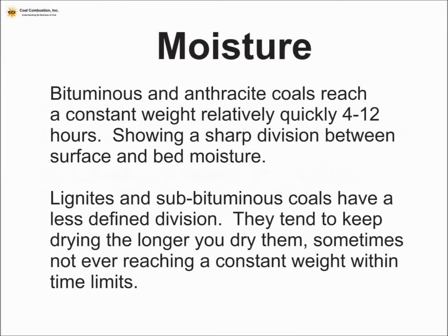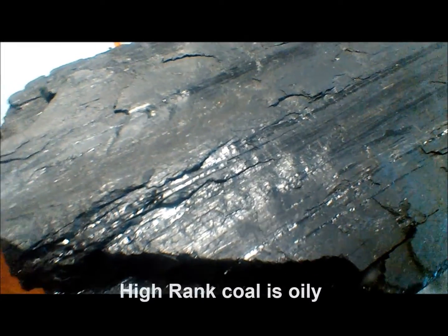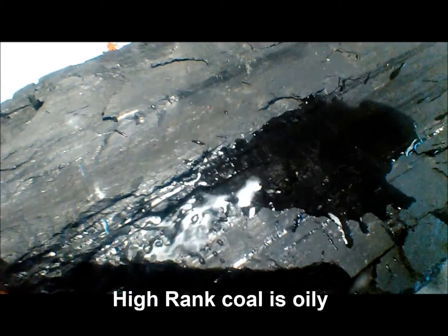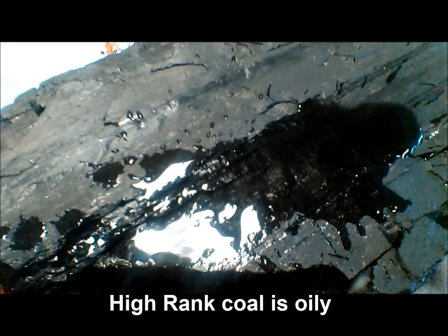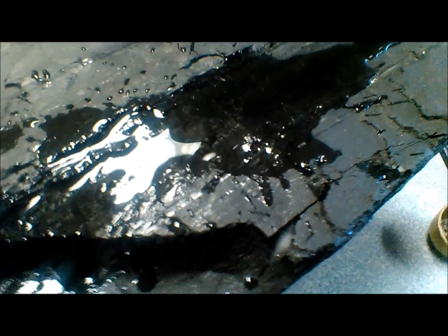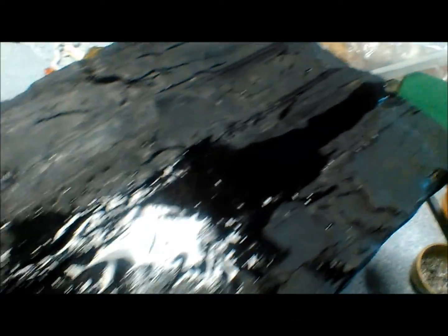Bituminous and anthracite type coals typically reach a constant weight relatively quickly, showing a sharp division between surface and bed moisture. Lignites and sub-bituminous coals tend to keep losing weight, or are more sponge-like in nature. Here's the sort of oily nature of bituminous coal, and why we can reach a constant weight when we do the air dry loss test.